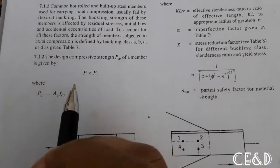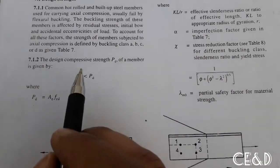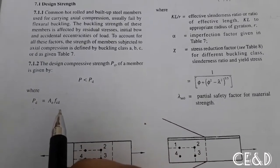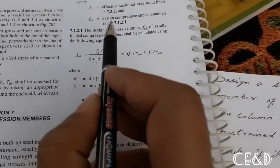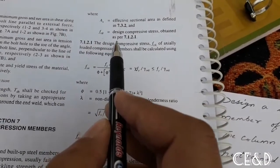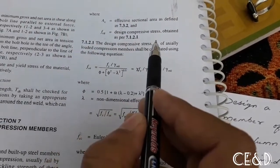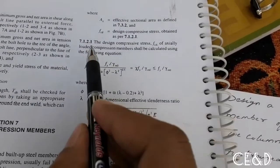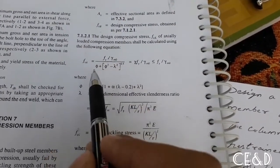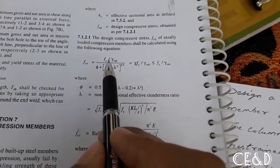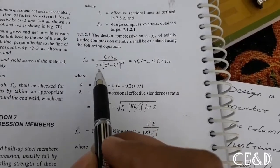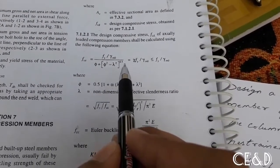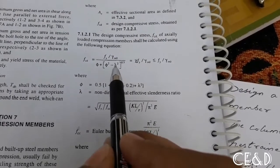The design compressive strength PD of a member is given by PD = AE × FCD, where AE is the effective sectional area and FCD is the design compressive stress obtained as per clause 7.1.2.1. The FCD formula is: FY divided by (gamma_M0 × (phi + (phi² − lambda²)^0.5)).